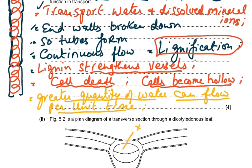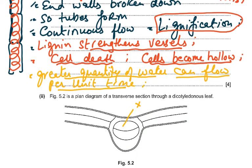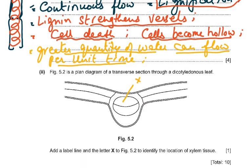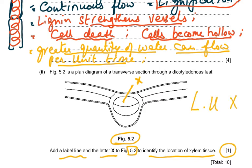Part two of the question shows Figure 5.2 — a plan drawing of a transverse section through a dicot leaf — and asks you to add a label line and the letter X to identify the location of xylem tissue. In the leaf, the upper part of the vascular bundle contains the xylem and the lower part is the phloem. This is the midrib of the leaf, and the upper part holds the xylem. That was a simple, easy one-mark question.